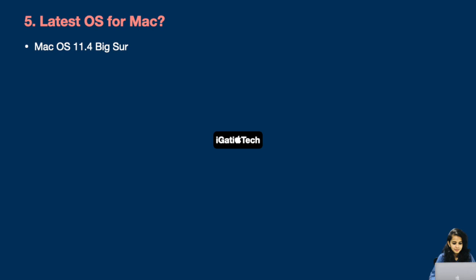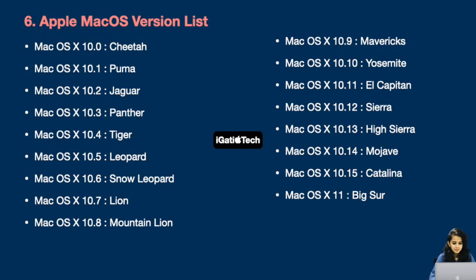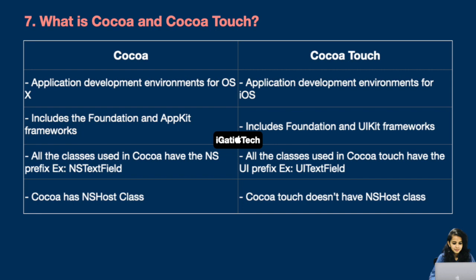Question number six: Apple macOS version list — 10.0 Cheetah, 10.1 Puma, 10.2 Jaguar, 10.3 Panther, 10.4 Tiger, 10.5 Leopard, 10.6 Snow Leopard, 10.7 Lion, 10.8 Mountain Lion, 10.9 Mavericks, 10.10 Yosemite, 10.11 El Capitan, 10.12 Sierra, 10.13 High Sierra, 10.14 Mojave, 10.15 Catalina, and 11 Big Sur.